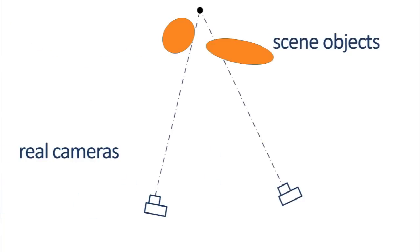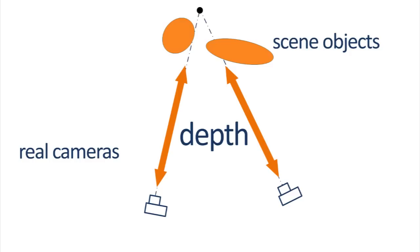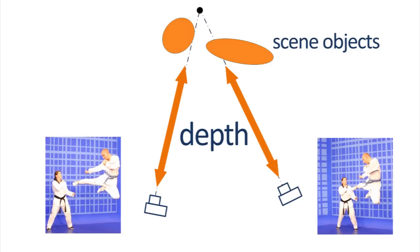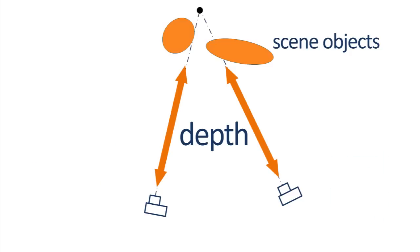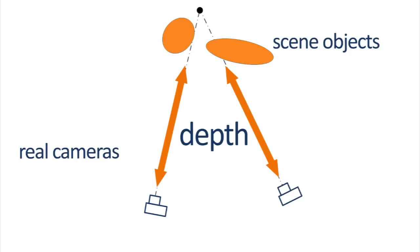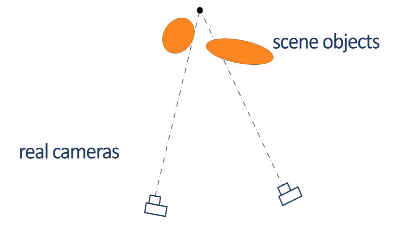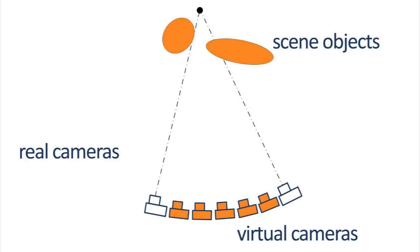So, what is a view synthesis? Here you see a camera setup with two real cameras. We can get the depth of the scene by analyzing the two real images. Out of that information we then generate virtual views, or so-called in-between images. These virtual camera positions lie on the baseline between the two real cameras, and if you compute enough virtual views, we can simulate a camera movement from one camera to another camera.